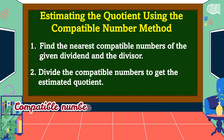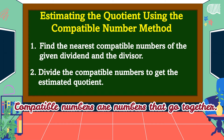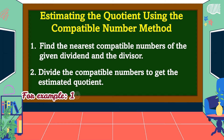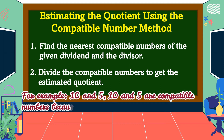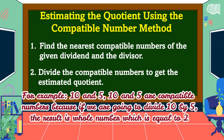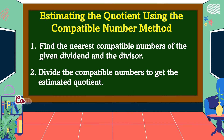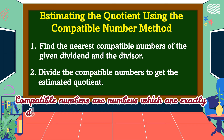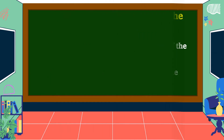Compatible numbers are numbers that go together. For example, 10 and 5 are compatible numbers because if we divide 10 by 5, the result is a whole number equal to 2 with no remainder. So, compatible numbers are numbers which are exactly divisible by one another without a remainder.